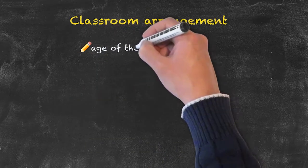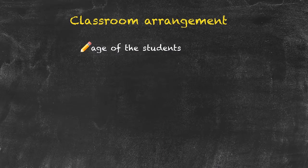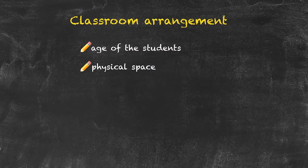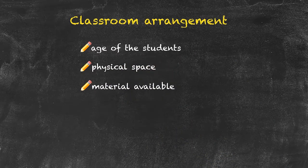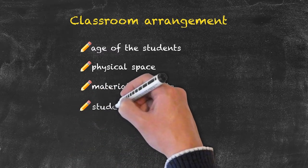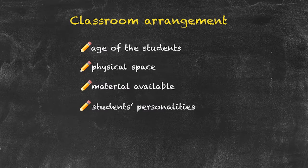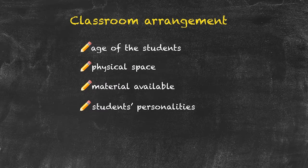What about the actual classroom arrangement itself? The dynamics of classroom interaction are often dictated by the arrangement of the classroom. The way in which the classroom is arranged could depend upon a number of factors, including the age of the student — we're unlikely to have the same arrangement for adult learners as for young learners — the actual physical space available, what material such as desks and chairs is available, and the students' personalities.